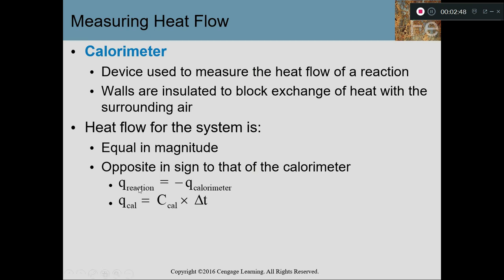We're going to be looking at what happens to the amount of energy in the surroundings. Whatever the calorimeter absorbs or loses, the exact same quantity of heat is going to be lost or gained by the reaction — but in the opposite direction. You see here that we have the calculation C·ΔT, sometimes referred to simply as CAT because that delta looks kind of like an A. The C of the calorimeter — the heat capacity — times the change in temperature gives you the heat gained or lost by the calorimeter.